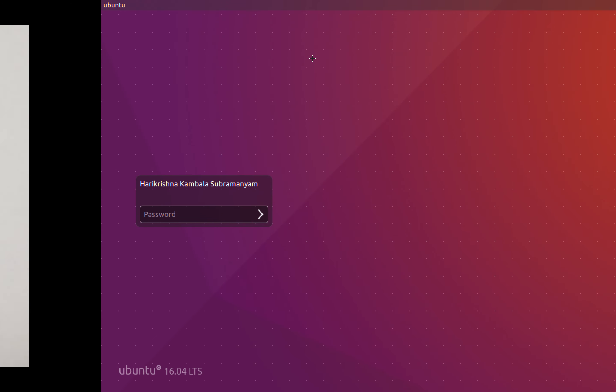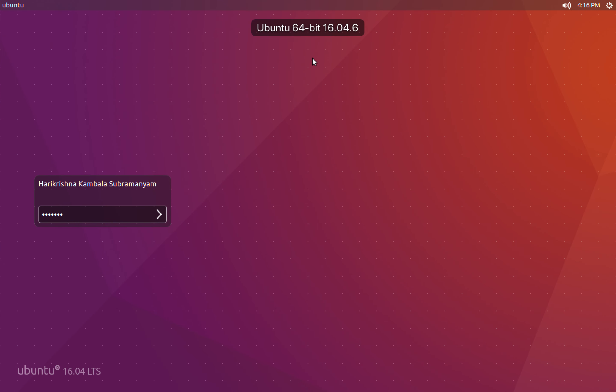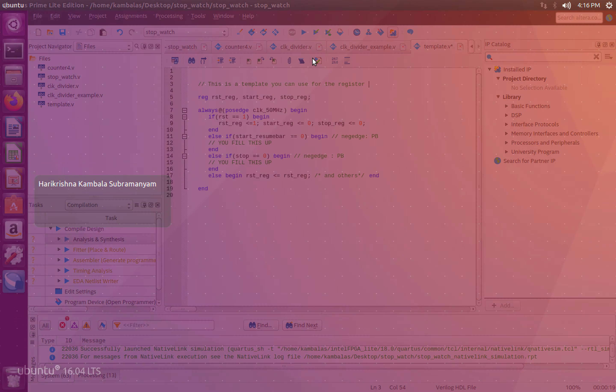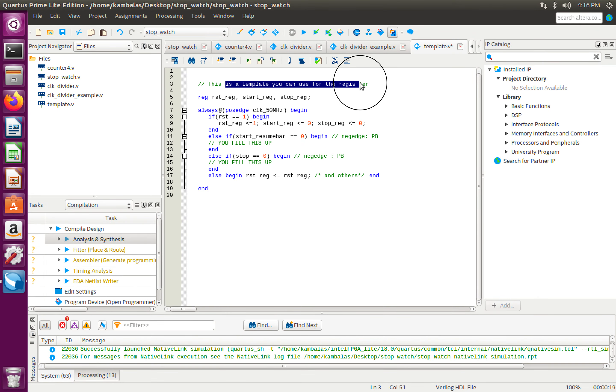Now let us look at a template code that will show us how to build this. So again, this is a template. This is not the complete code. So once I have my module and inputs and outputs and everything declared, I will declare these three individual registers, my reset register, my start register and my stop register.